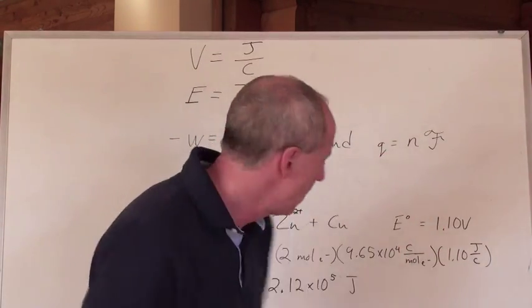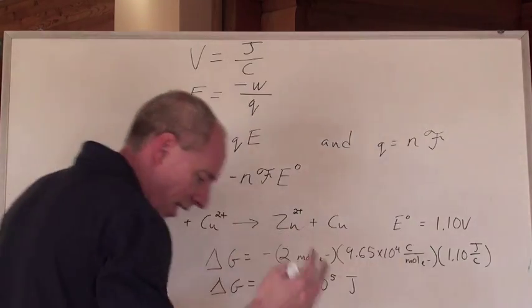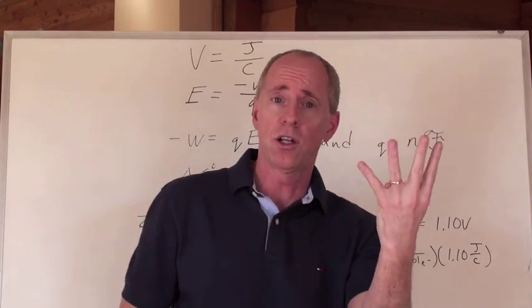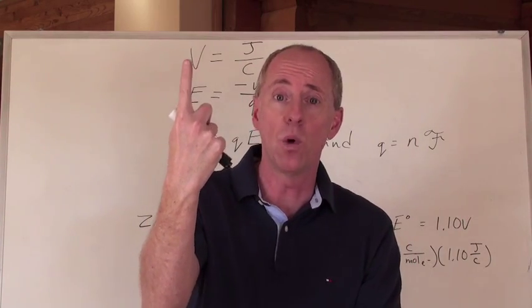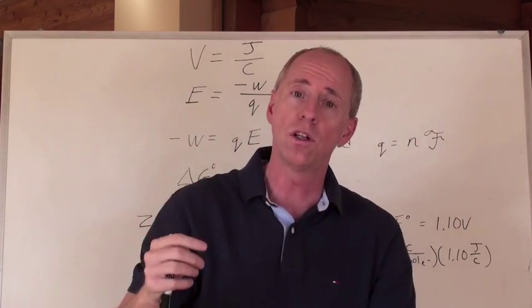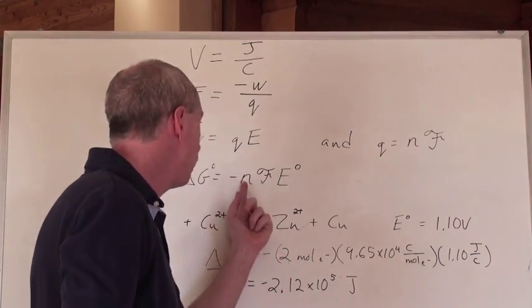And remember, now here's the thing. If one half reaction had 4 electrons in it, the other had 1, you have to multiply this half reaction that had 1 electron in it by 4, right? To get 4 gained and 4 lost. So that's where the N would be 4.